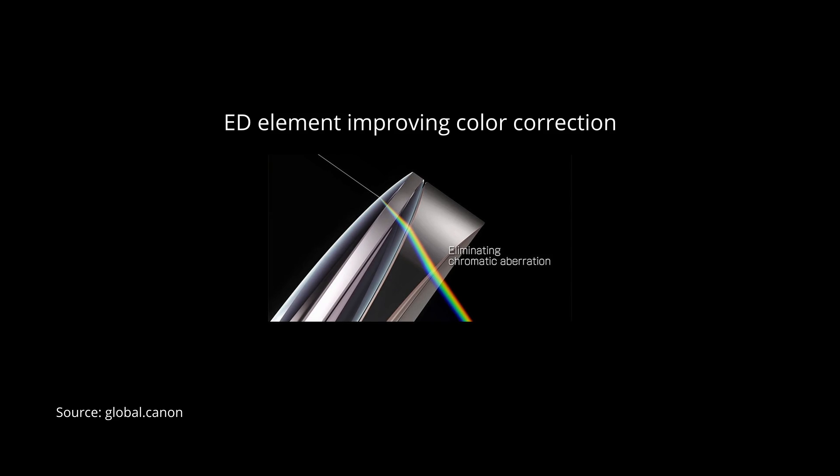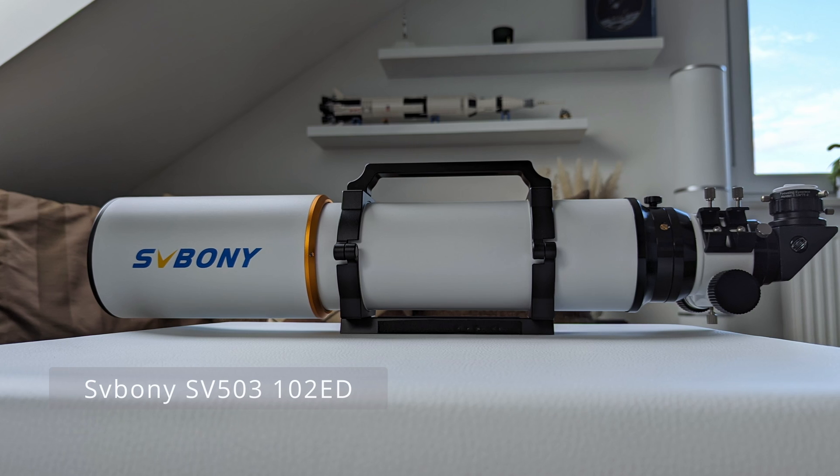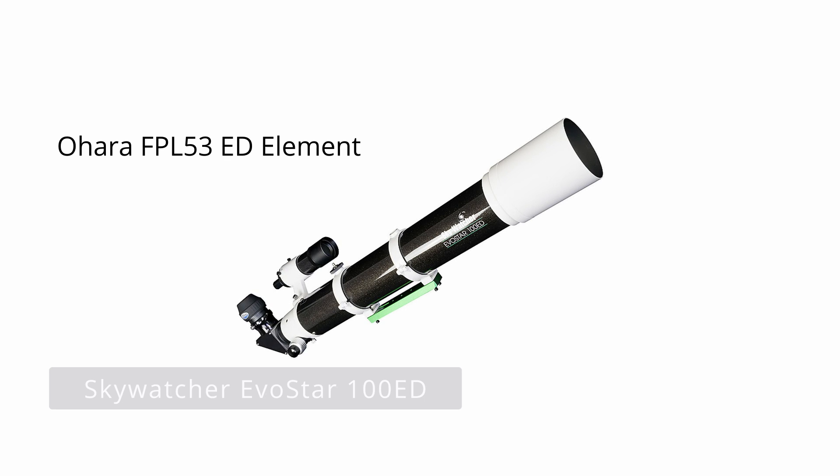Good mid-range achromatic telescopes are ones that feature one normal and one low dispersion or ED glass element. These can deliver much better color correction even at medium focal lengths between f/7 and f/9, and start to make decent instruments for astrophotography as well. My recommendation is to look for ED refractors with an SFPL-51 or SFPL-53 lens element. Good examples would be the 4-inch f/7 SV503 doublet from Svbony featuring an SFPL-51 glass element, and the slightly more expensive 4-inch f/9 Evostar doublet from Skywatcher featuring an FPL-53 glass element by Ohara.